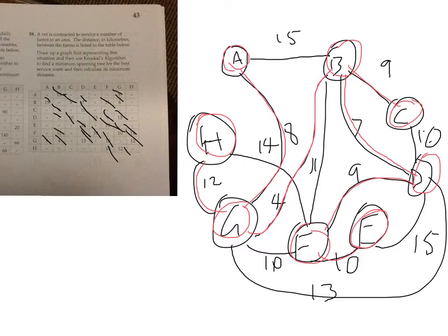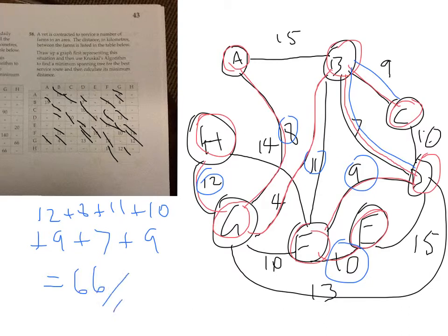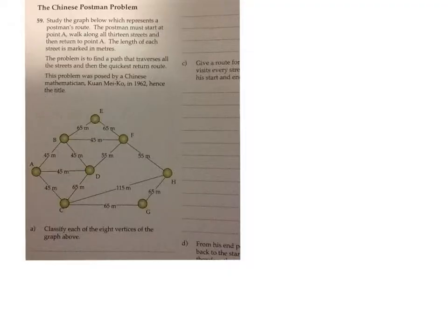Now I just need to add all those up to get the total weight of my minimum spanning tree. So I've got 12 plus 8 plus 11 plus 10 plus 9 plus 9 plus 7 plus 9. I've got eight towns and seven roads between eight towns. That gives me the total weight.